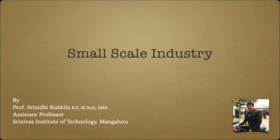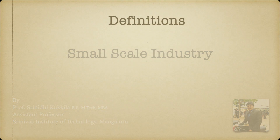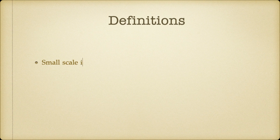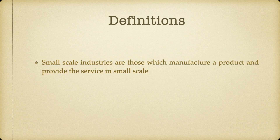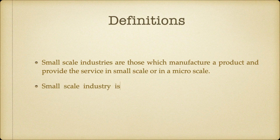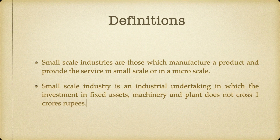Starting with the definition: what is small scale industry? Industries are those which manufacture a product and provide a service. Everything like production, labor, and investments done in small scale or micro scale are small scale industries. Small scale industry is an industrial undertaking in which the investment in fixed assets, machinery and plant does not cross one crore rupees.